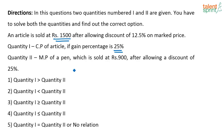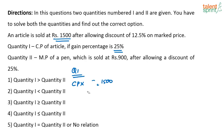For Quantity 1, cost price of the article multiplied by 125/100 equals 1500, or cost price multiplied by 5/4 equals 1500. So the cost price of the article is 1200. The value of Quantity 1 is 1200.